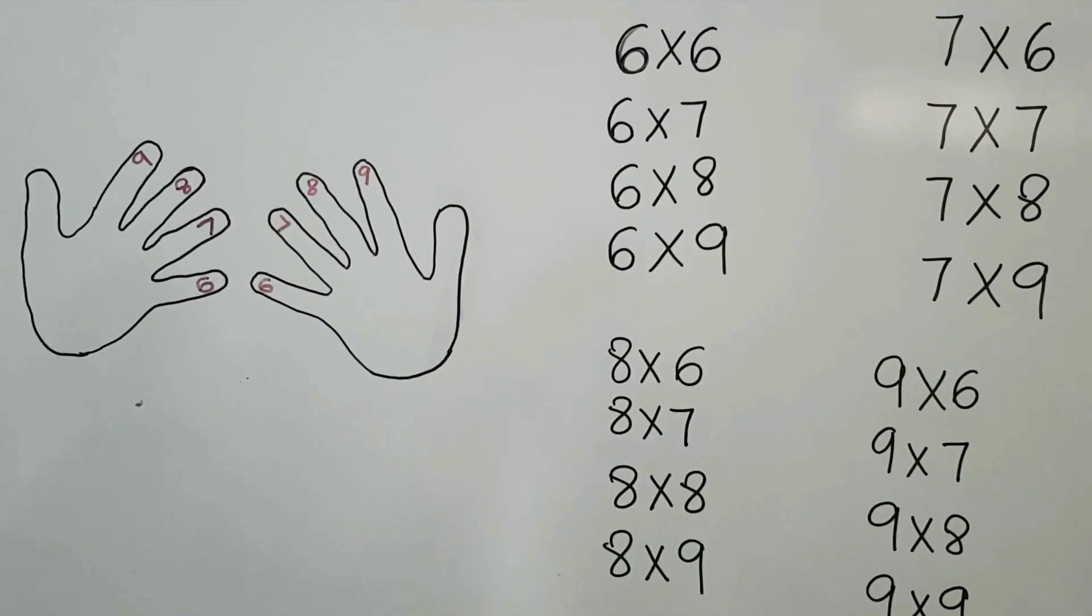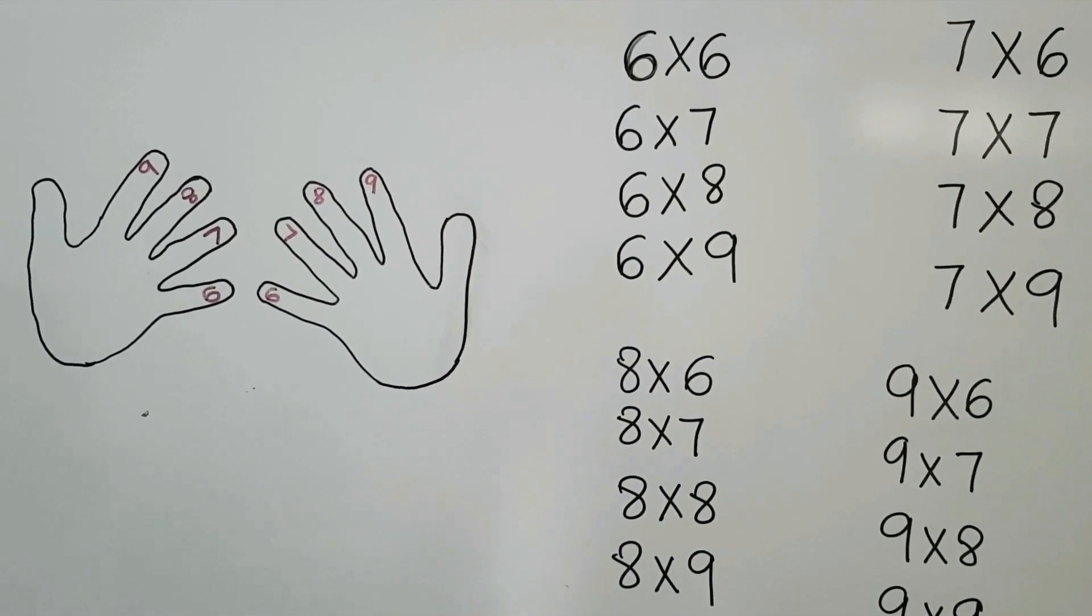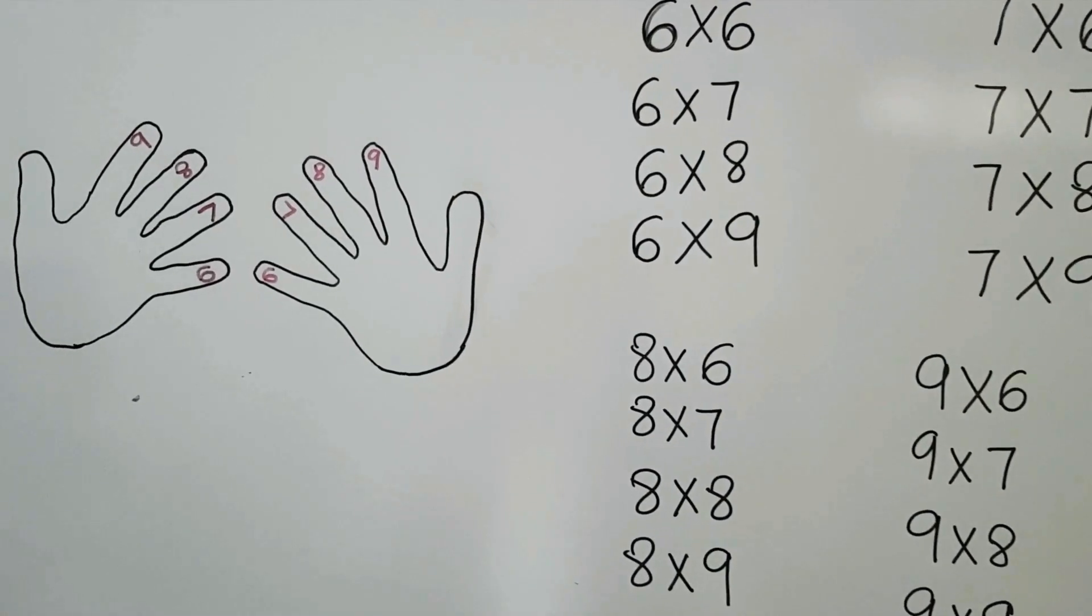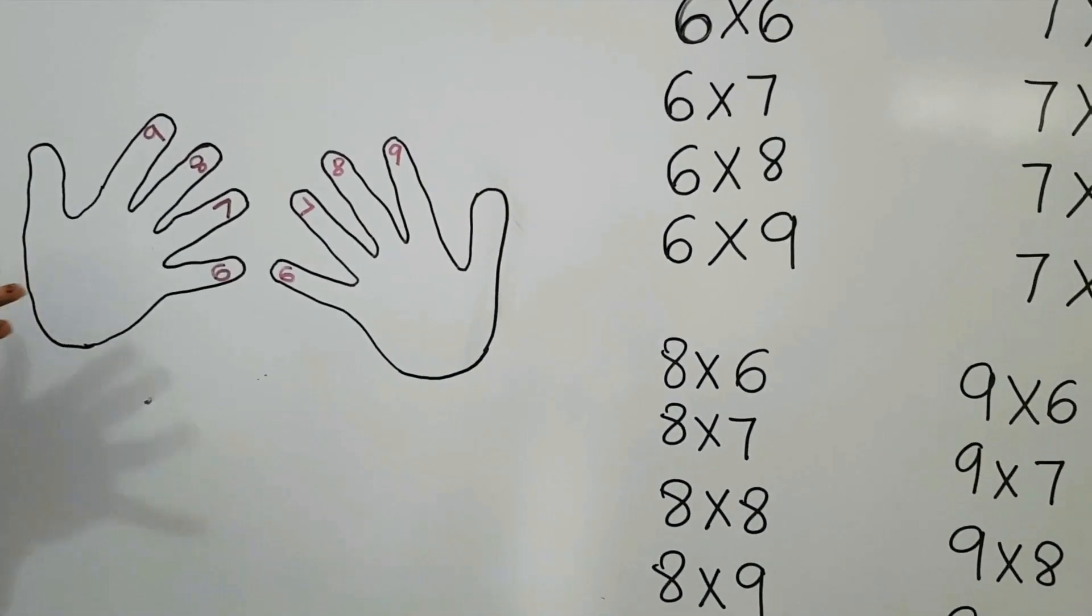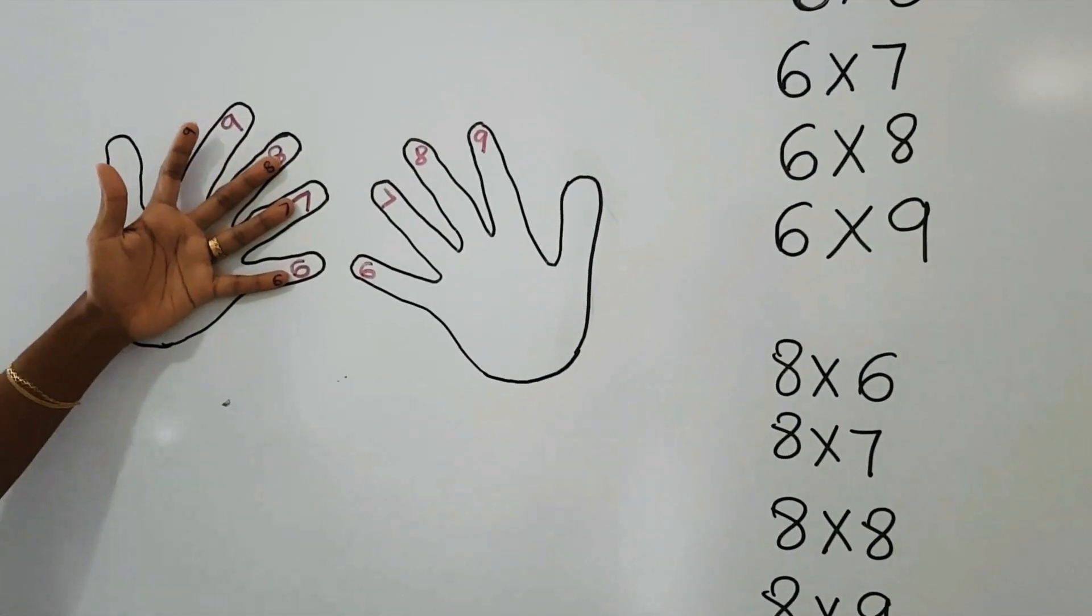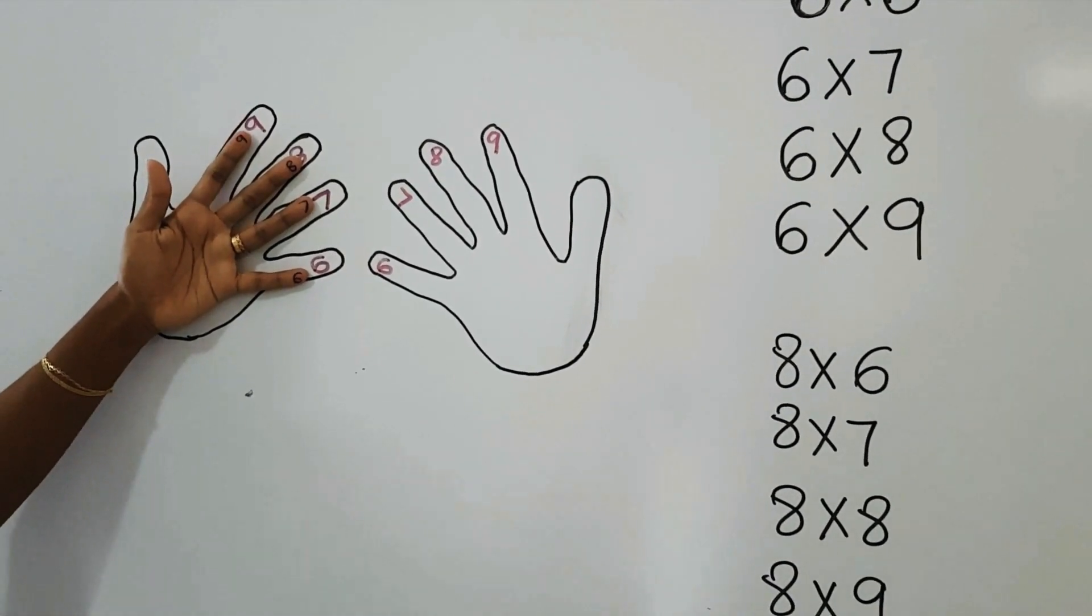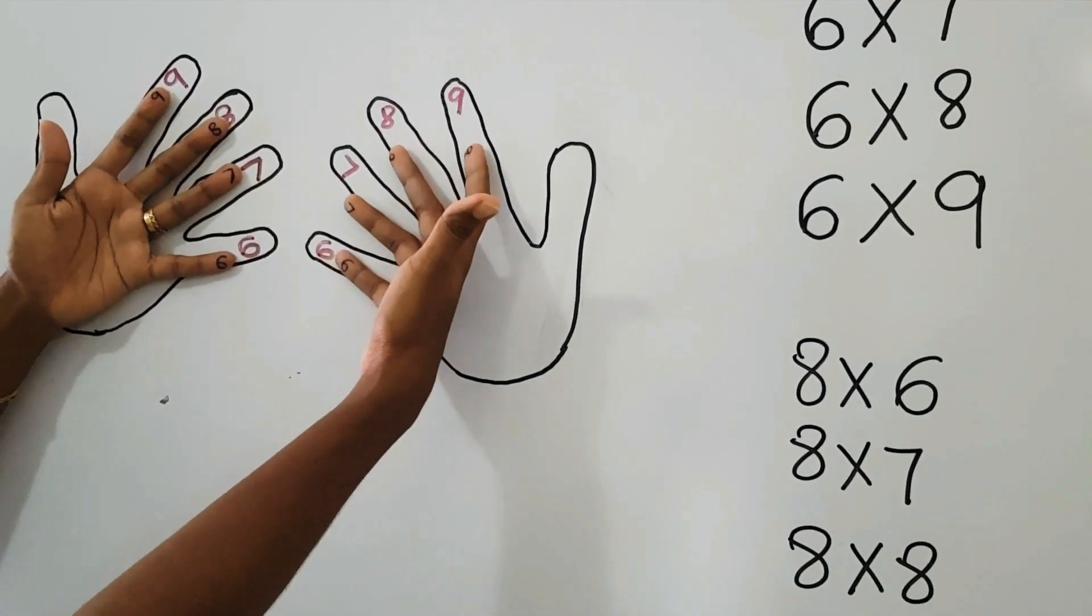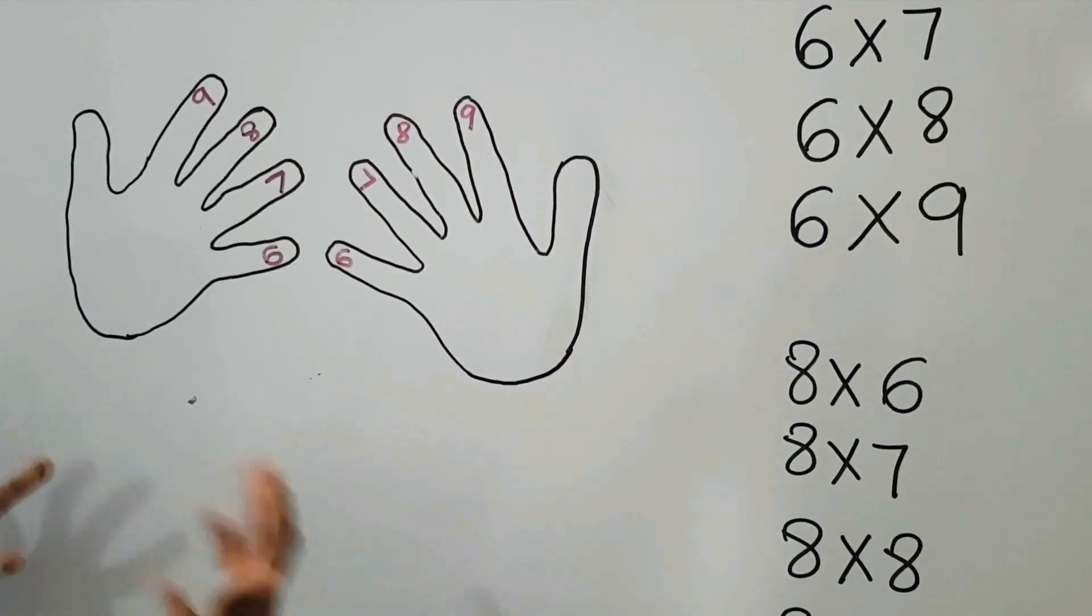Now you would be wondering why I have drawn two palms on this board and also numbered them. See, 6, 7, 8, 9, same as the other hand: 6, 7, 8, 9. Using your fingers, we are going to find the answers for all of these numbers.